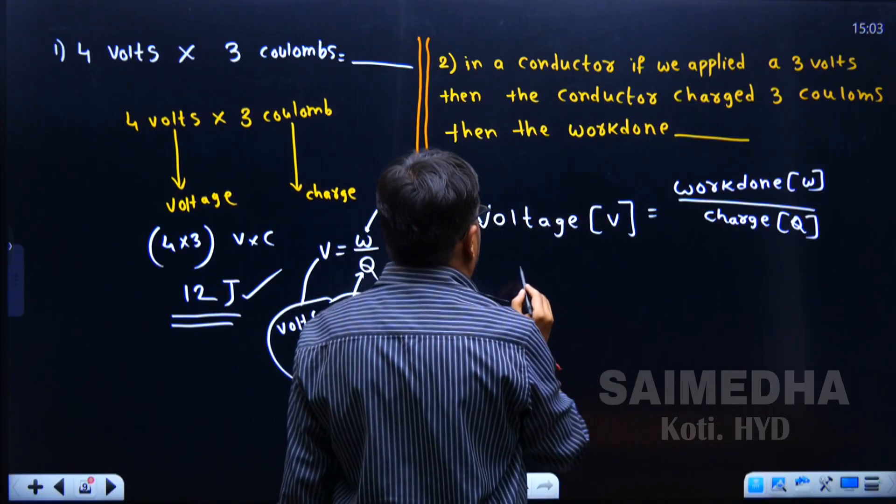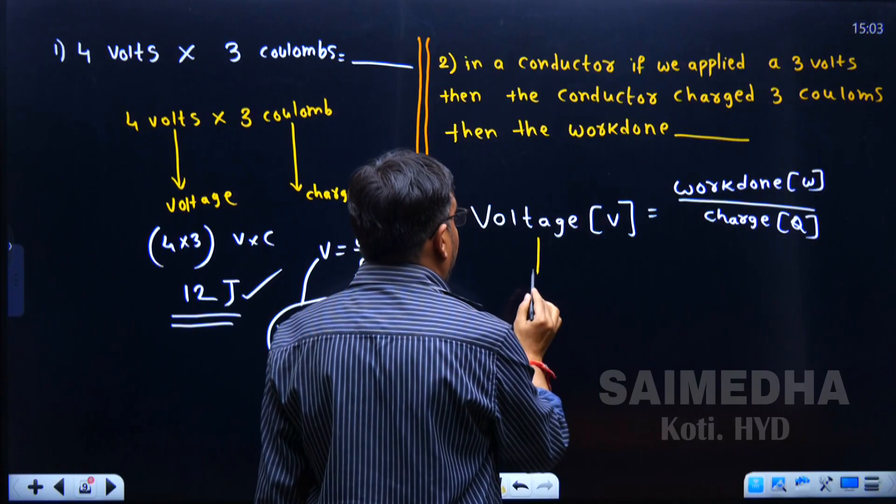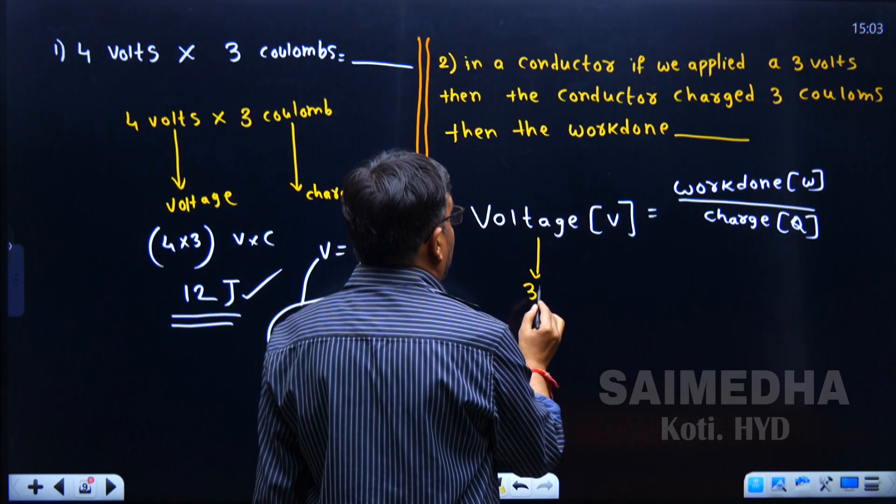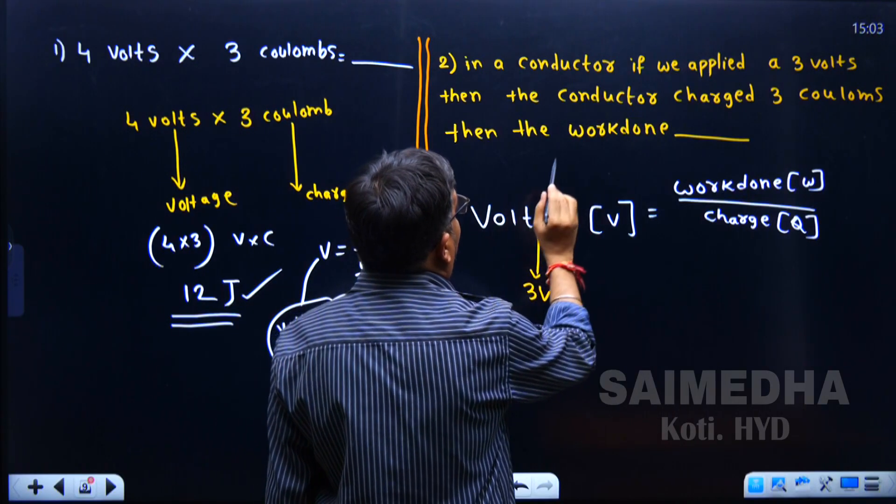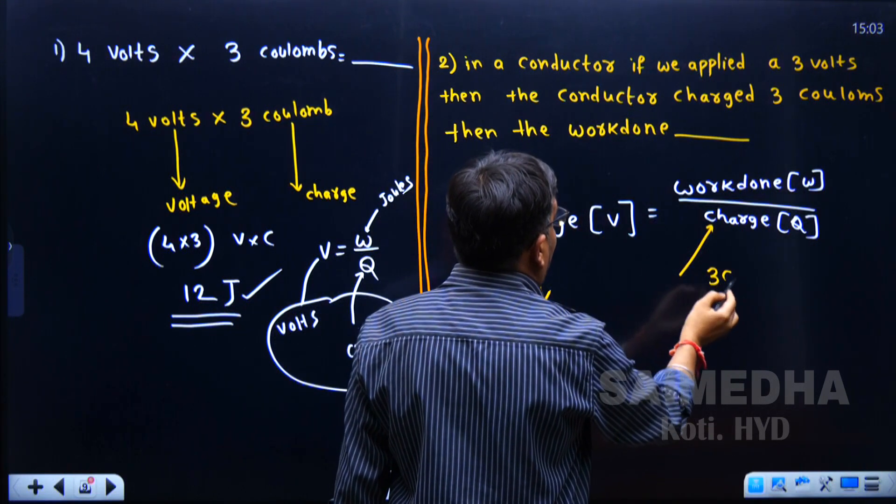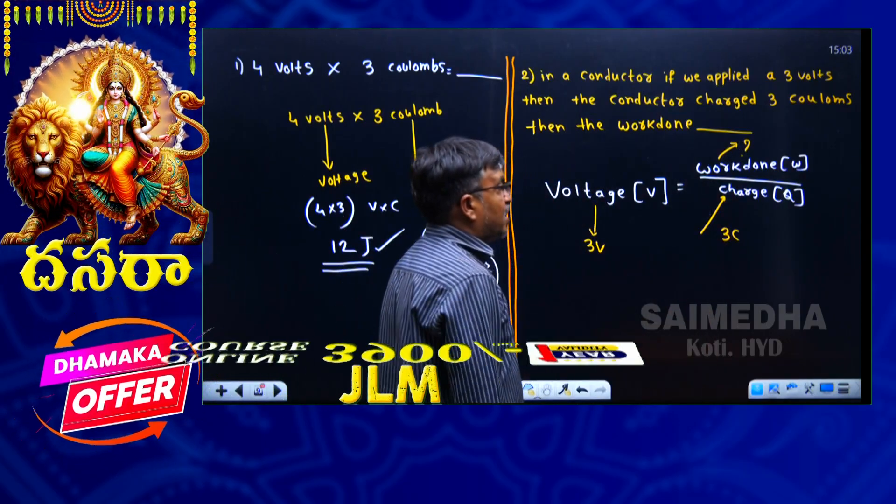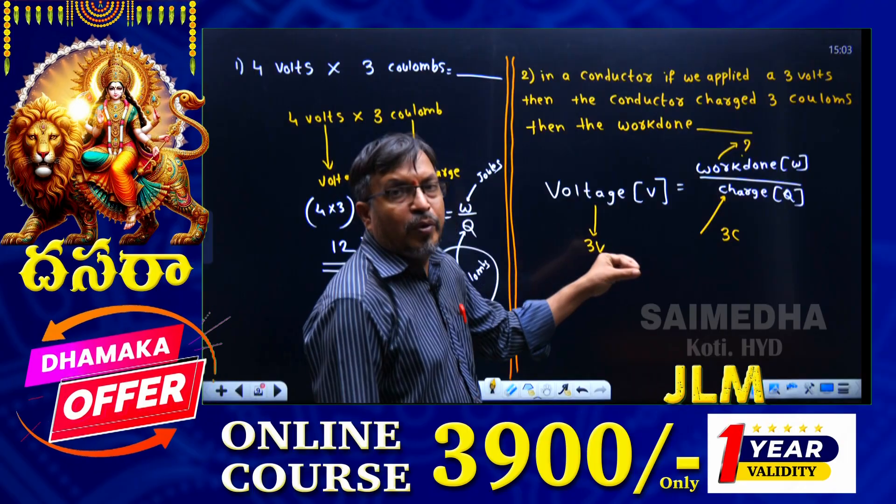When 3 volts is applied, the conductor charges 3 coulombs.